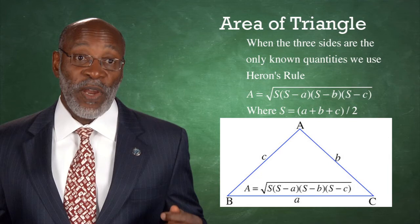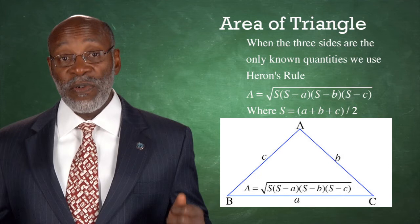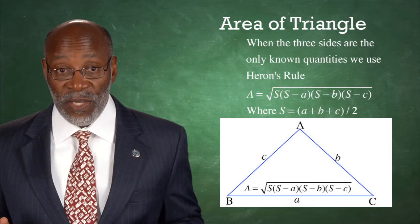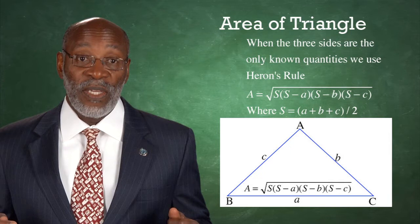When the three sides are the only known quantities of a triangle, we can use Heron's rule to find the area. To use Heron's rule, we define a quantity S, or capital S, that's equal to side A plus side B plus side C, all divided by 2. Another way of saying it, capital S is one-half the perimeter of the triangle.